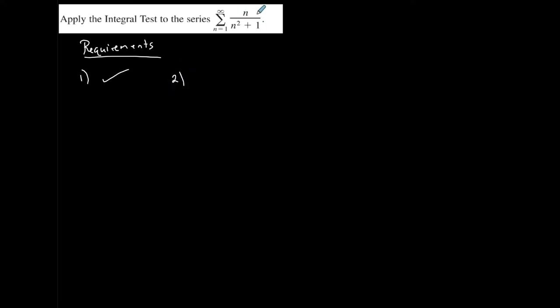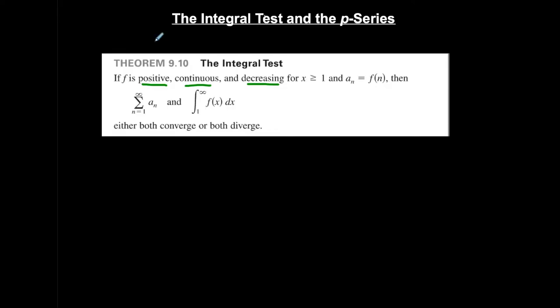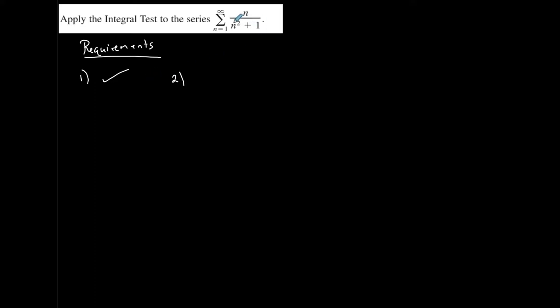Check to see if it's continuous for all values greater than or equal to 1. Think about vertical asymptotes — but this doesn't have any vertical asymptotes because it's a plus and not a minus in the denominator. So there are no discontinuities, and any value greater than or equal to 1 can be plugged in with no problems. It's continuous, so the second requirement is also met.